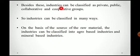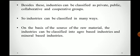Besides this, industries can be classified as private, public, collaborative and cooperative groups. There should be a private industry — it means PVT. There should be a public industry — it means LTD, meaning limited. Collaborative and cooperative means a mixed industry, meaning they are working together in partnership. This topic we will learn in detail in lesson number 15. So the industries can be classified in many ways.